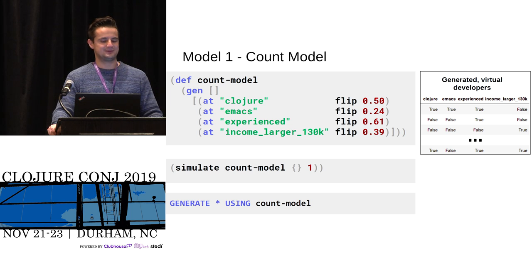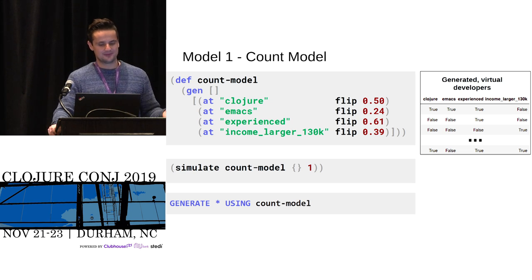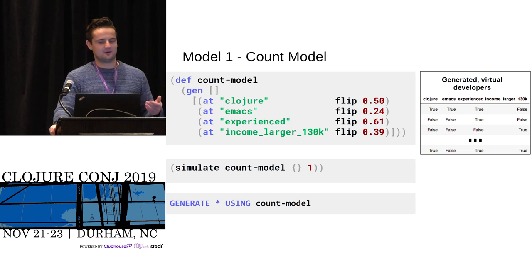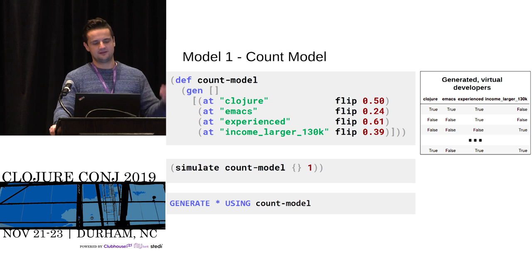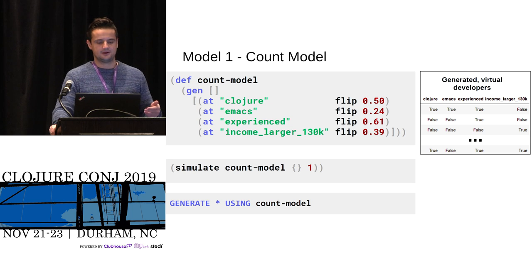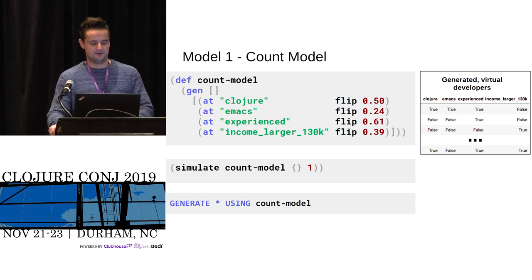This is where InferenceQL comes into play — it's a query language for models. We want to take any probabilistic model and ask the same types of questions to any different model. To simulate new data from this model, we call the Clojure function simulate, give it the model name — the count model — and an empty map for conditions, then specify the number of simulations. That's the Clojure backend for the InferenceQL query "generate everything" using a specific model. We can then generate virtual developers as described before.